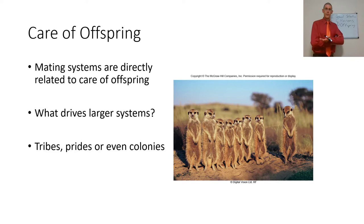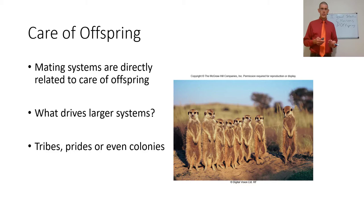Take meerkats, for example — it takes a meerkat village to properly raise a clutch of meerkats. So these larger social systems are ultimately driven by the needs of the offspring, and that determines what kind of social group they form. The basis of all social relationships is really: what do the offspring need?